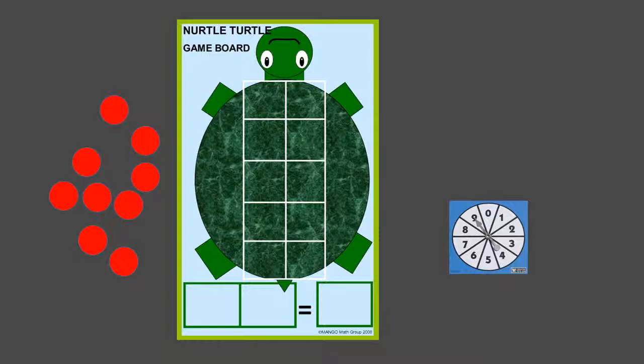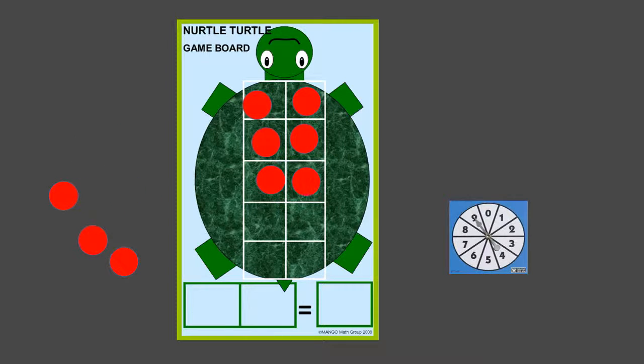To do the activity, students will have their Nerdle the Turtle 10-frame board and a spinner. They'll spin their spinner. In this case it came up with nine, and they'll move their counters onto the board into the different columns and rows.